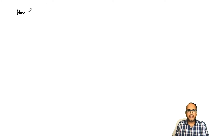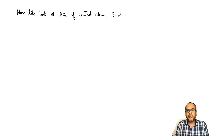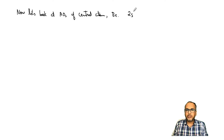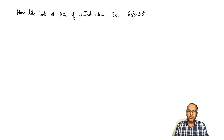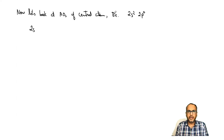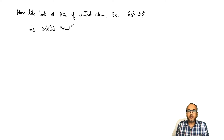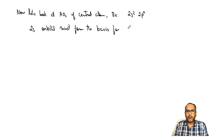Now that we have determined the SALCs, let's look at the atomic orbitals of the central atom, which is beryllium. The central atom has valence shell 2s² and 2p⁰. The 2s orbital, being spherically symmetric, forms the basis for σg⁺, the totally symmetric representation under the D∞h point group.